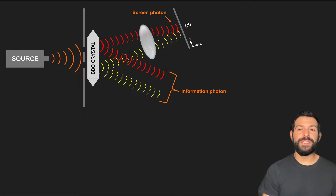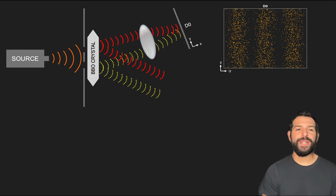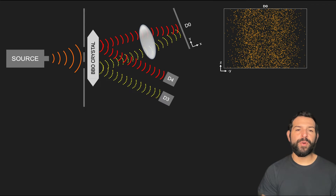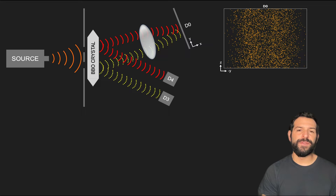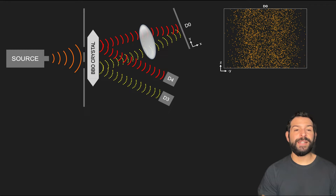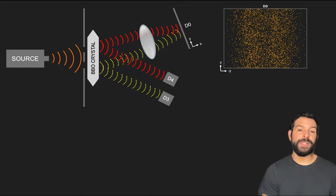Now, a common misconception I've seen when explaining this experiment is the belief that there would still be a fringe pattern at the screen if we refrain from measuring the information photon, and that only performing a measurement that tells us which slit the source photon went through will destroy the interference. In this setup, if the information photon is detected at D4, we know it went through the top slit. If detected at D3, then it passed through the bottom slit.